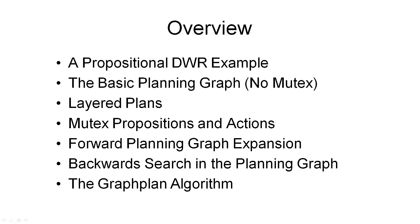As I have told you before, the graph plan planner performs two types of operations. The first is forward planning graph expansion, which is what we've looked at so far. And the second is a backward search through the planning graph.